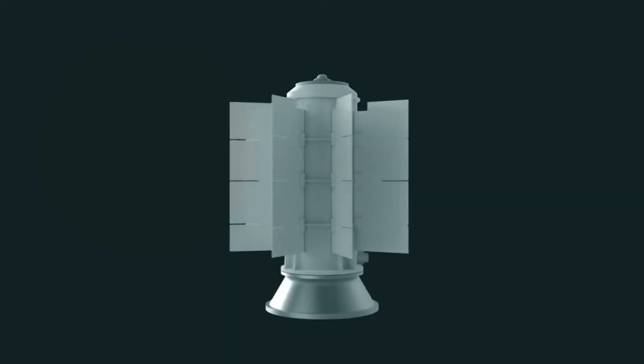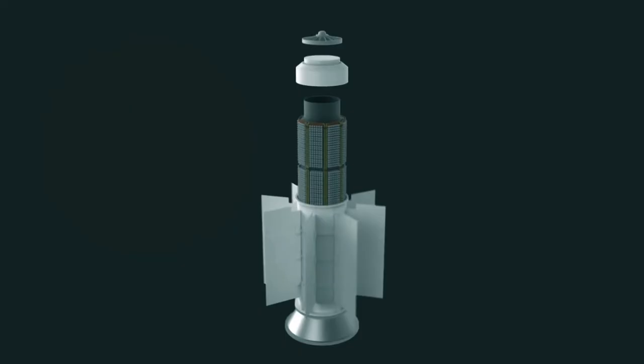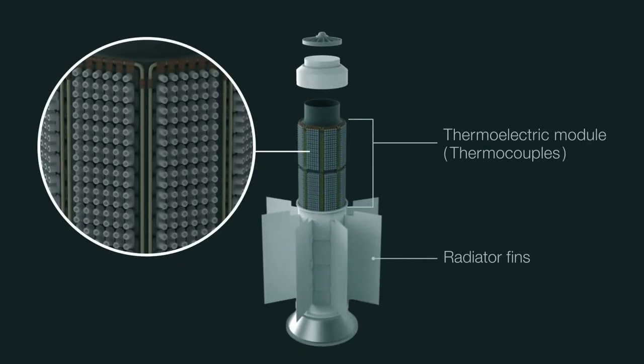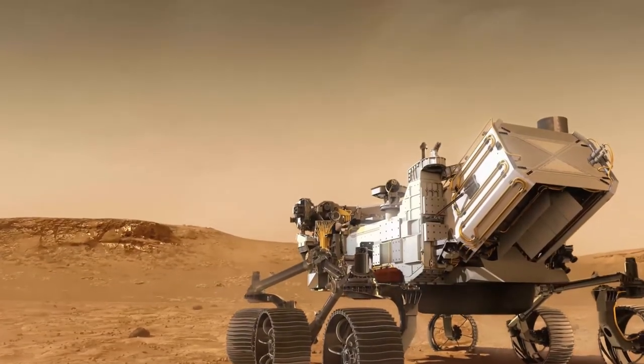Inside a radioisotope thermoelectric generator, or RTG, these thermocouples are strung together in a long series so they can generate a steady current of electricity that can provide robotic spacecraft with the power they need to operate.